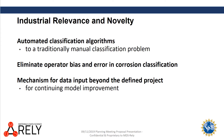This project will improve on the traditionally manual classification of scratch corrosion tests by applying an automated classification algorithm. This algorithm will eliminate operator bias and error in corrosion classification, and it will also provide a mechanism for input of data beyond the defined scope of the project for continuing model improvement.